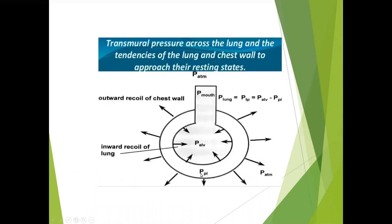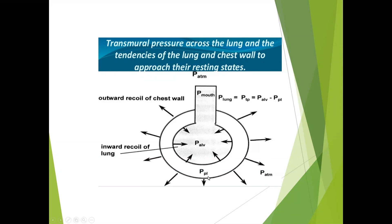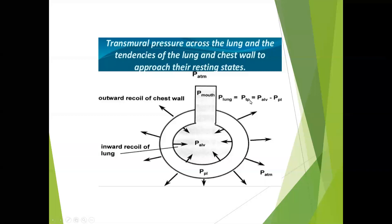To understand forces affecting the lung during inspiration and expiration, we have different pressures: atmospheric pressure, pressure at the mouth opening, airway pressure, and pressure in the alveoli. We also have two forces: the outward recoil of the chest wall and the inward recoil of the lungs. Pleural pressure plays a major role in lung mechanics, and trans-pulmonary pressure equals alveolar pressure minus intrapleural pressure. These are all the forces that affect the lungs.